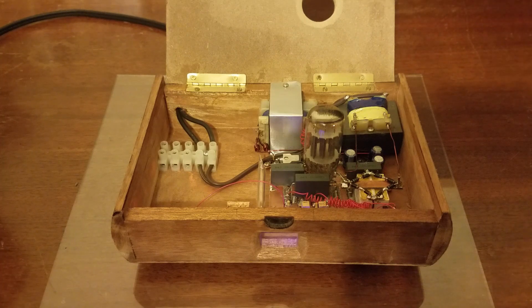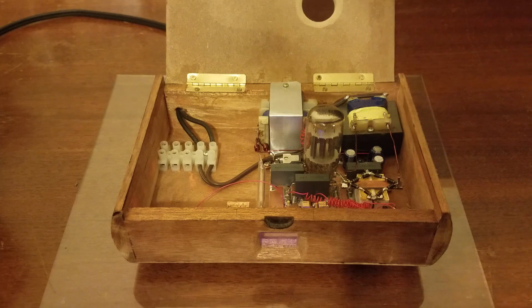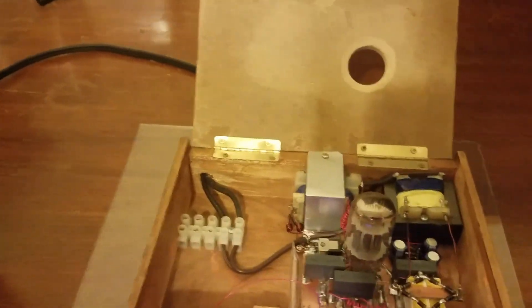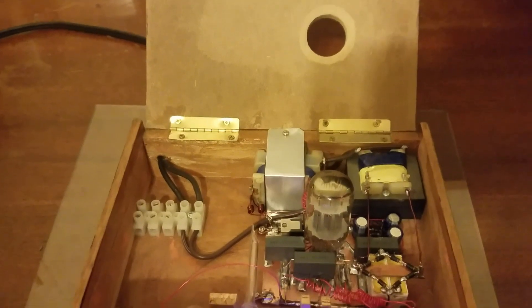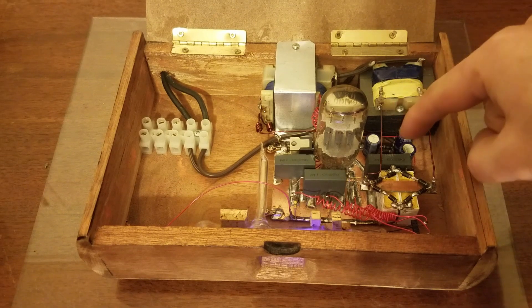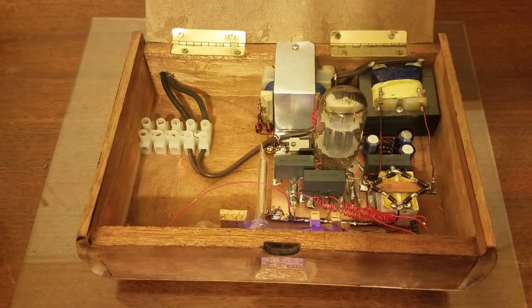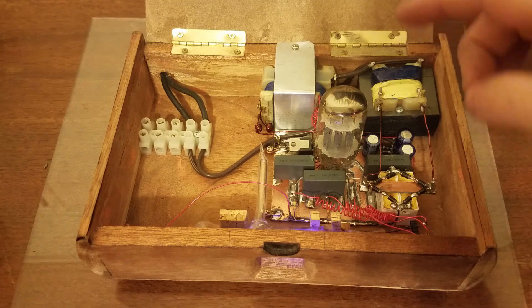There's a few different parts to this. We have the high voltage power supply right here, which generates the 500 volts that this tube needs to run. We also have a voltage multiplier back here, which provides the negative 52 volts that the tube needs for bias.